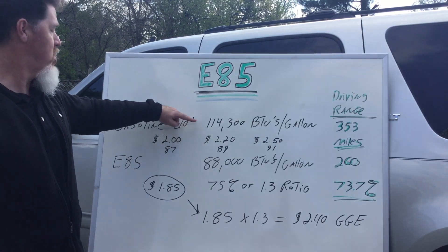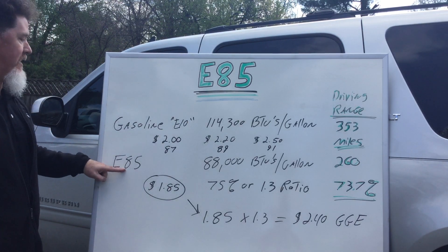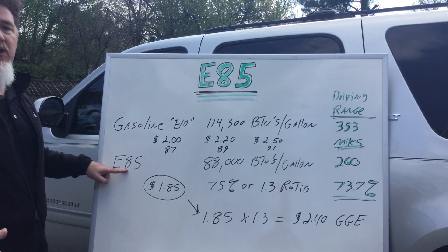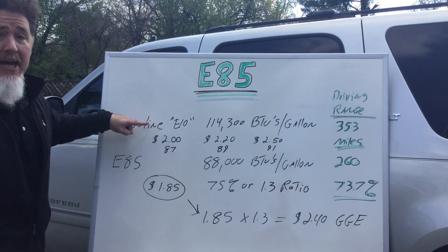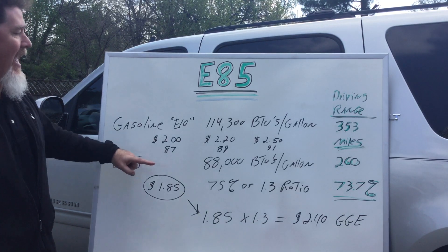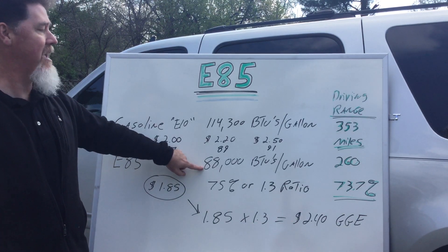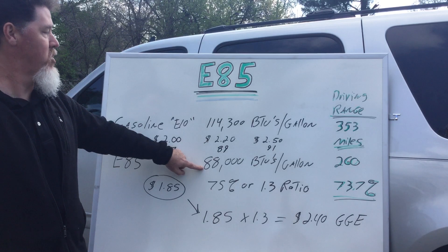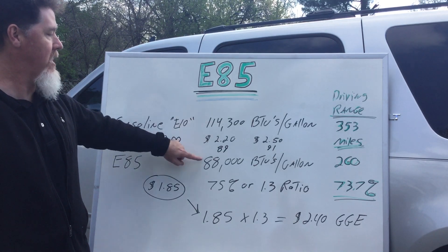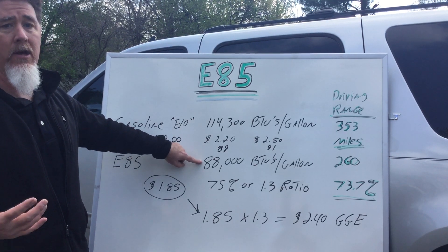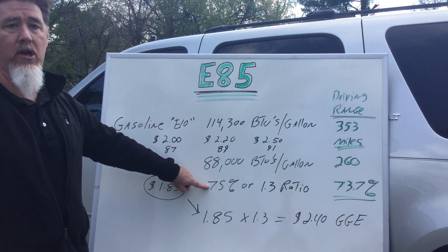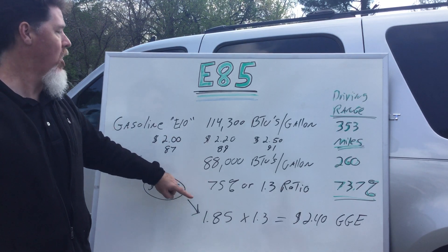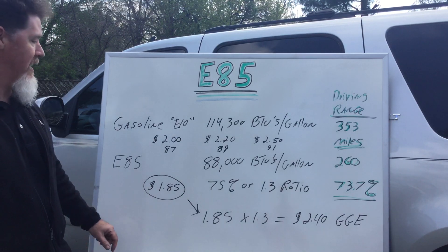When you start looking at E85, which is 85% ethanol and 15% probably E10, it has around 88,000 BTUs per gallon. So when you look at this right away you notice it's a lot less — in fact it's about 75% as much.